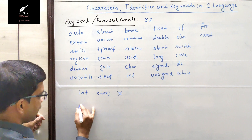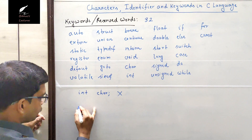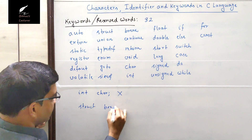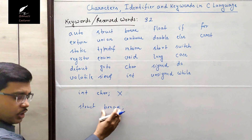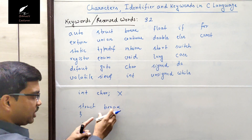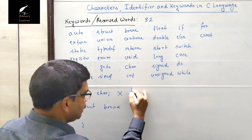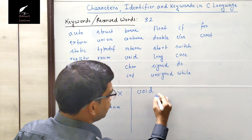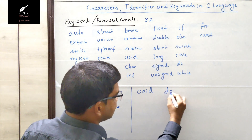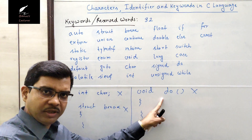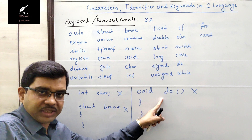Similarly, you cannot write something like 'struct break', because break is already a keyword and cannot be used as a structure name. Likewise, whenever we are defining functions — suppose the return type is void — you cannot give the function the name 'do', because do is a keyword and cannot be used as a function name.